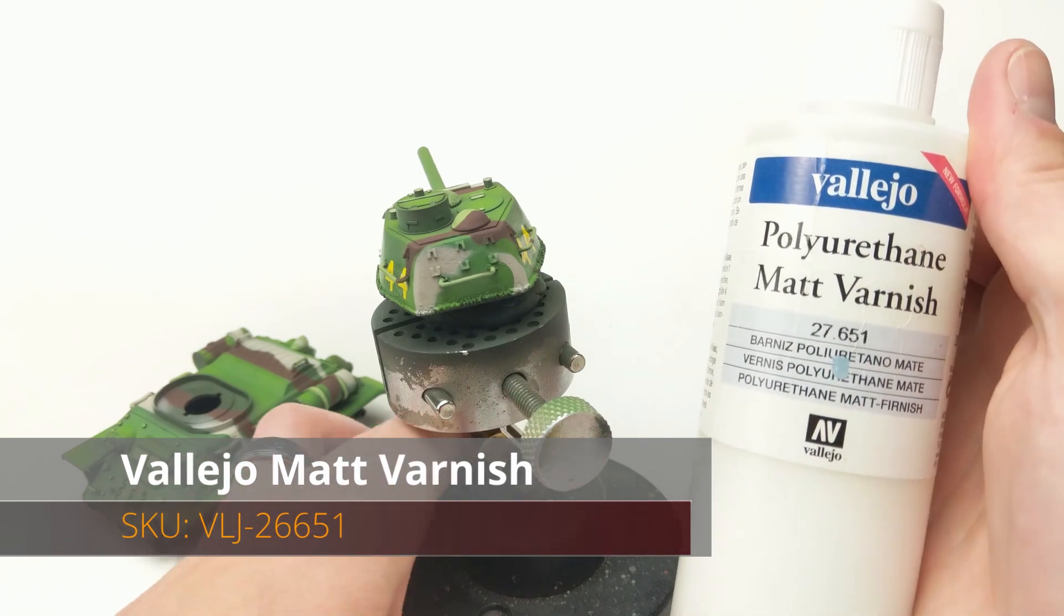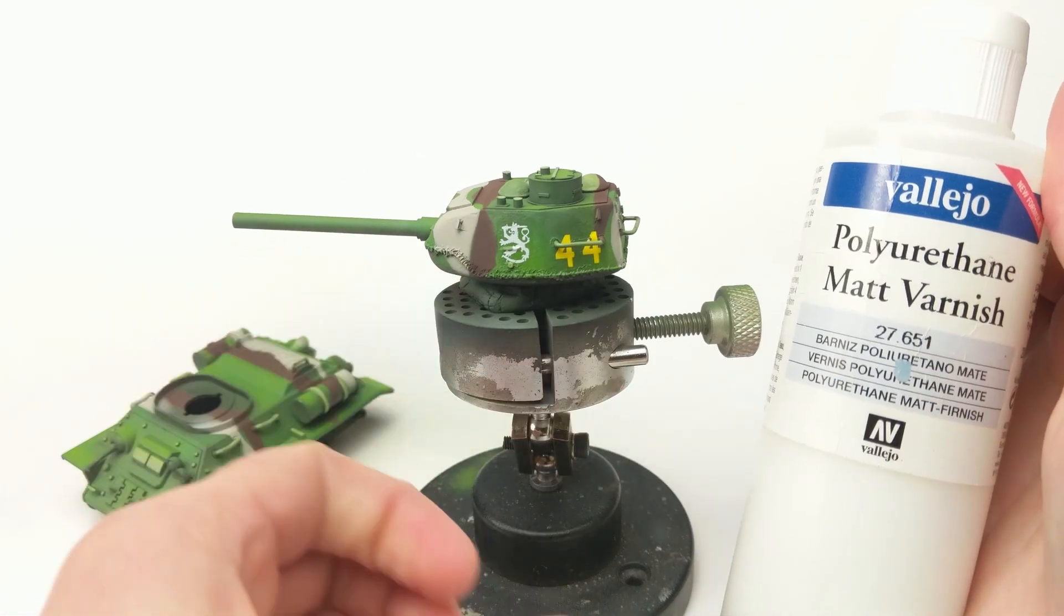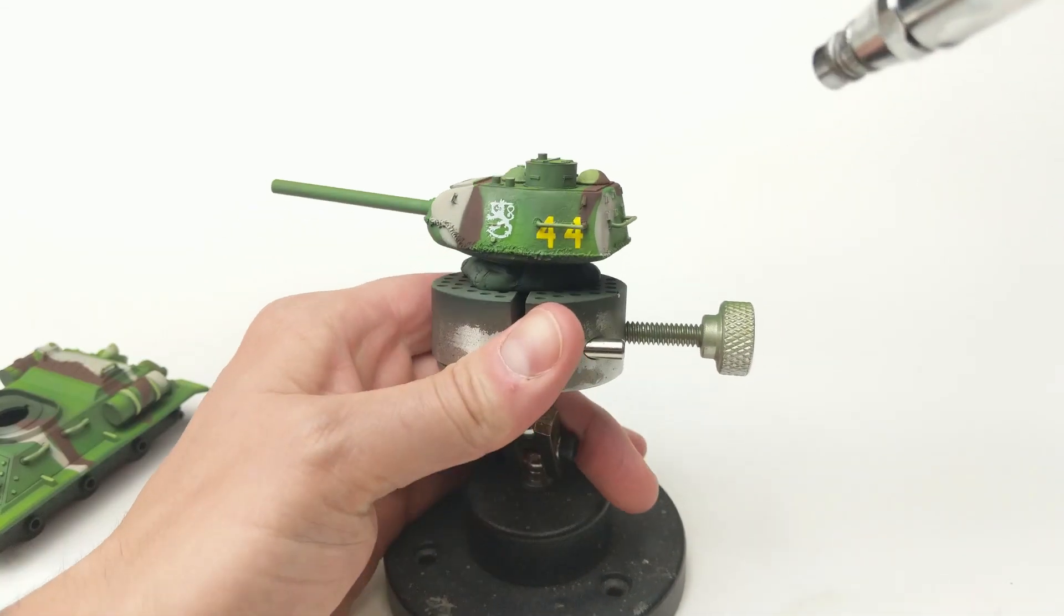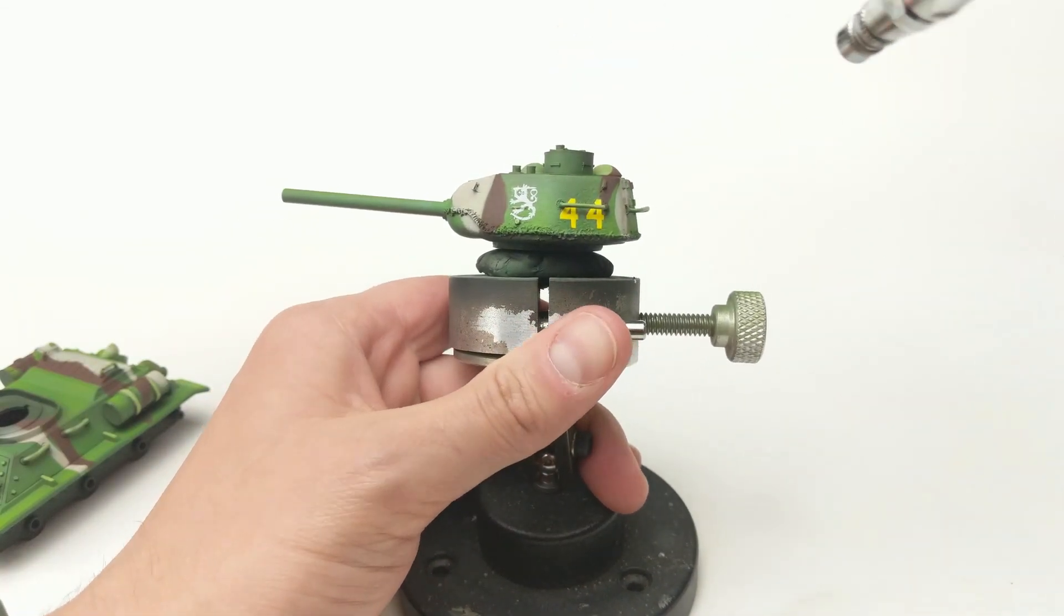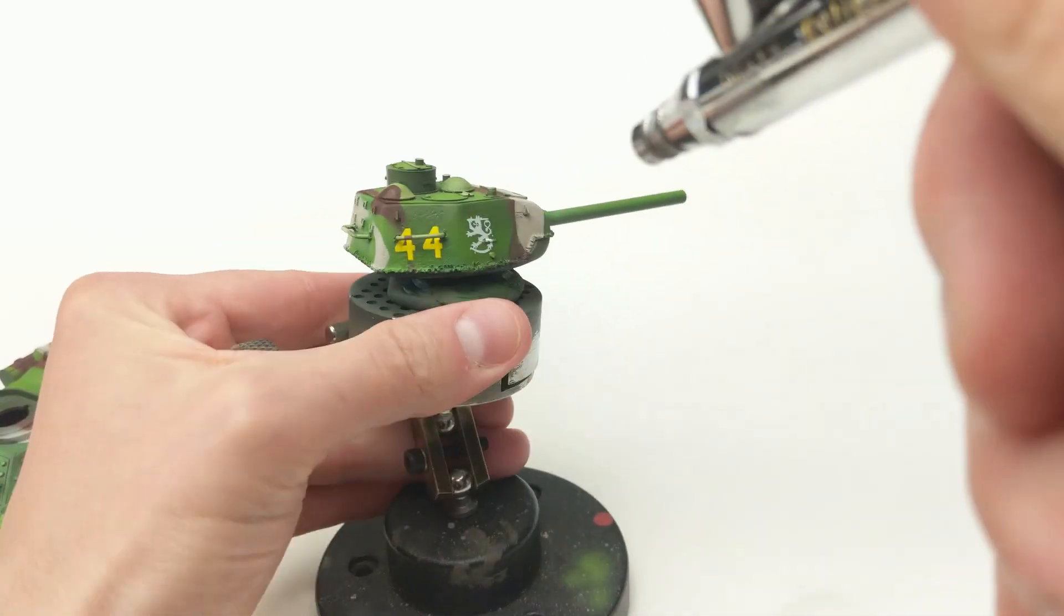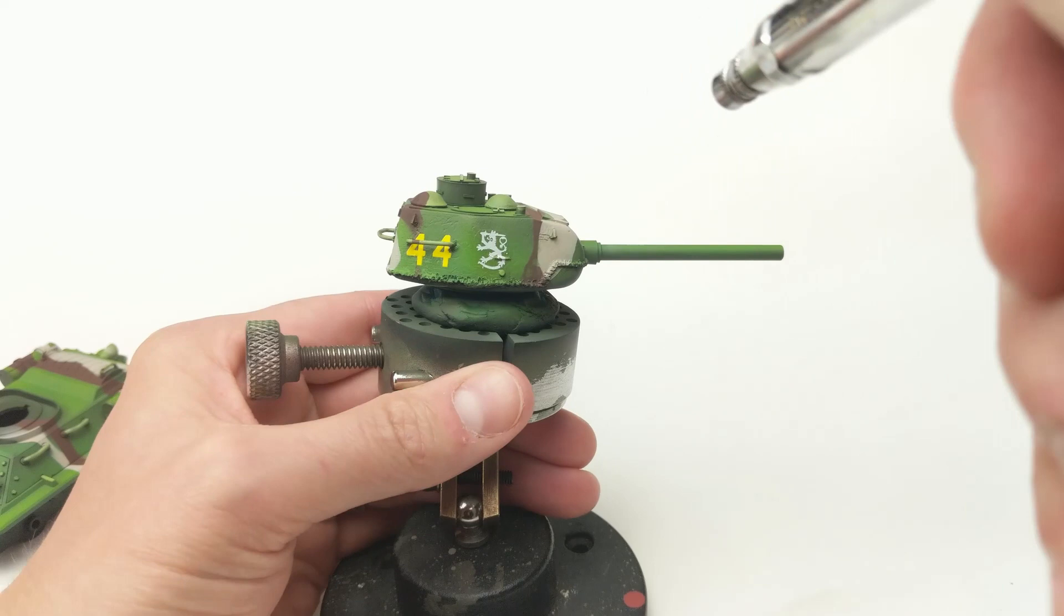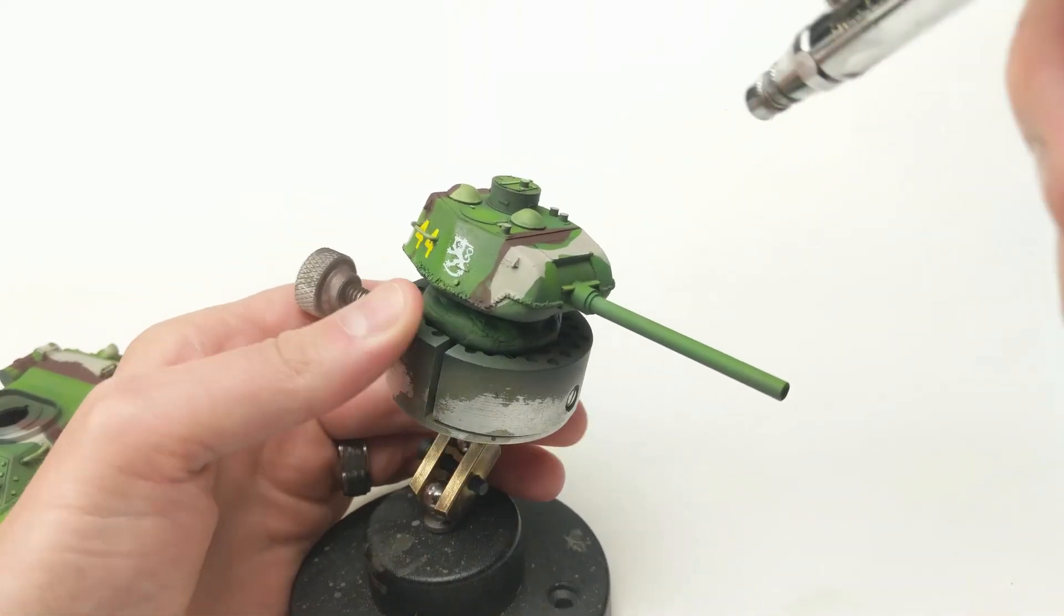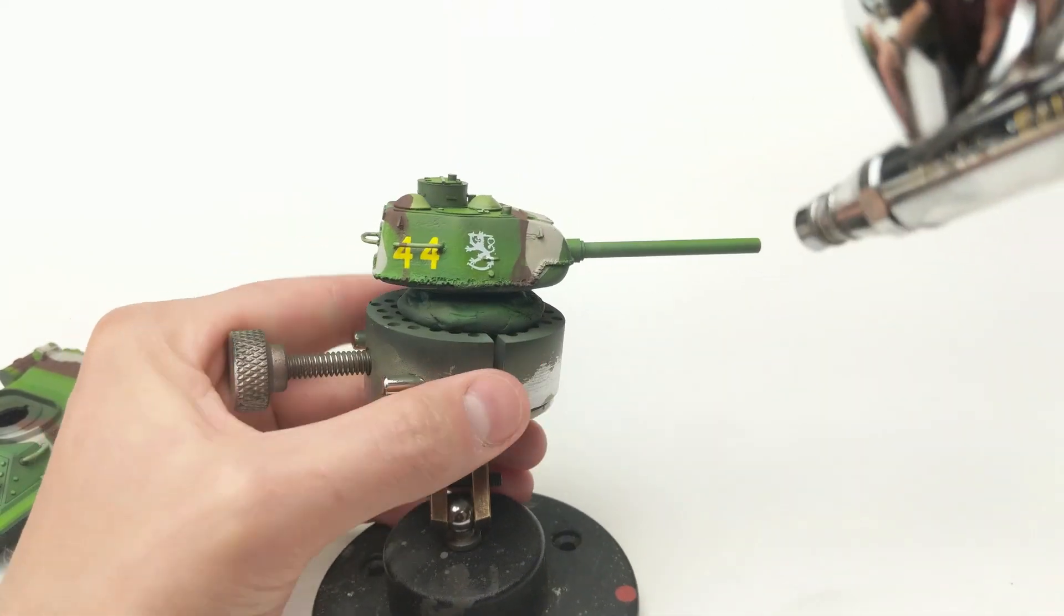Once the decals are in place, it's time to get out some matte varnish. I like the Vallejo matte varnish, it's personal preference. Put it on there, and then just let the model sit overnight at least so it has time to cure both the layers of paint you put on with the camouflage, and also the decals that completely adhere to the model. At that point, you're pretty much done.